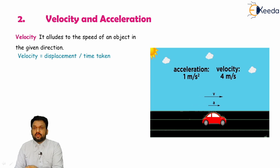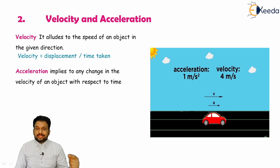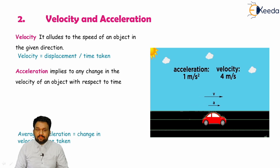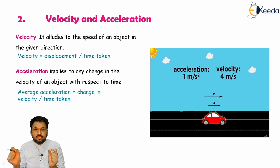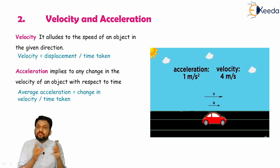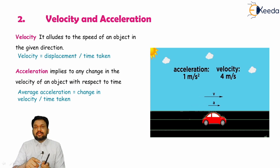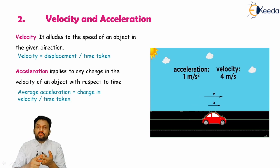That is your speed, that is your velocity — and with velocity you also have a proper direction. Acceleration directly implies any change in the velocity of an object with respect to time. The change in speed is velocity, and the change in velocity is acceleration. If you are moving at 60 km/h that is your velocity, and if your speed increases from 60 to 70 to 80 km/h, then that change in velocity — from 60 to 80 km/h — means you are experiencing acceleration.